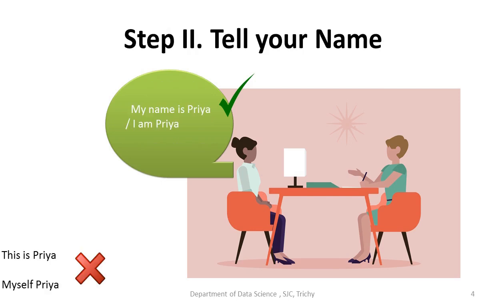Step number two: tell your name. Like, 'My name is Priya' or 'I am Priya.' Don't say 'This is Priya' or 'Myself Priya.' And one more thing — if the interviewer has already said 'Hi Priya, introduce yourself,' in that case you start with a formal greeting, leave your name, and then mention your location.